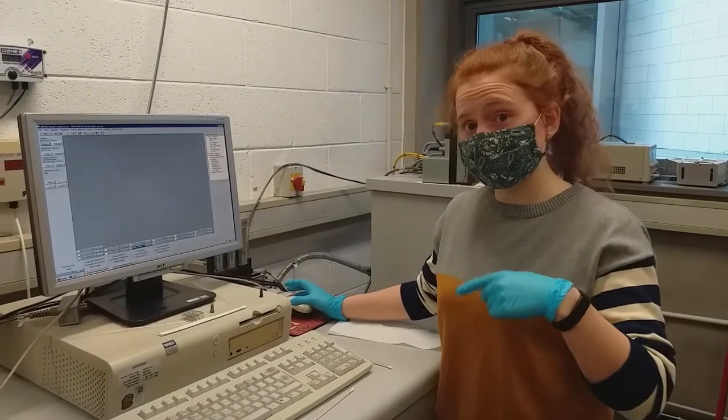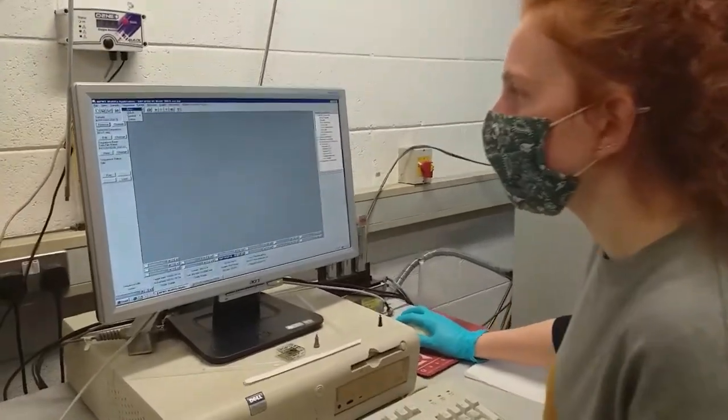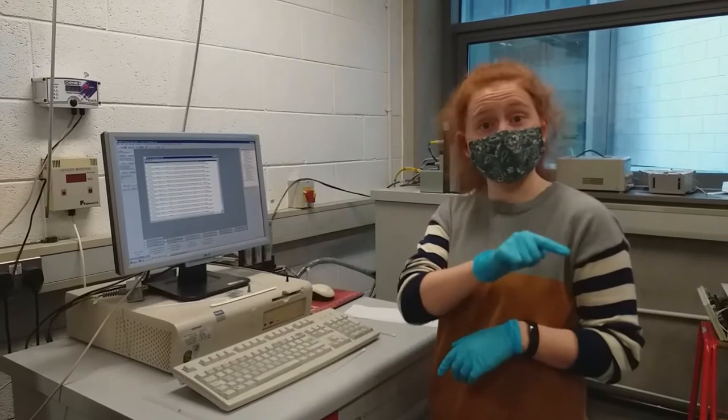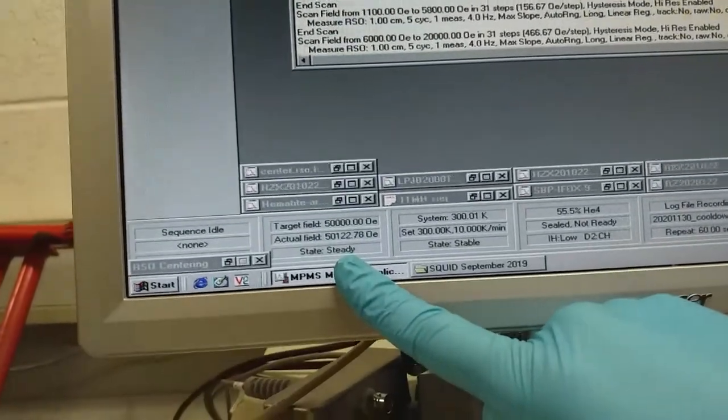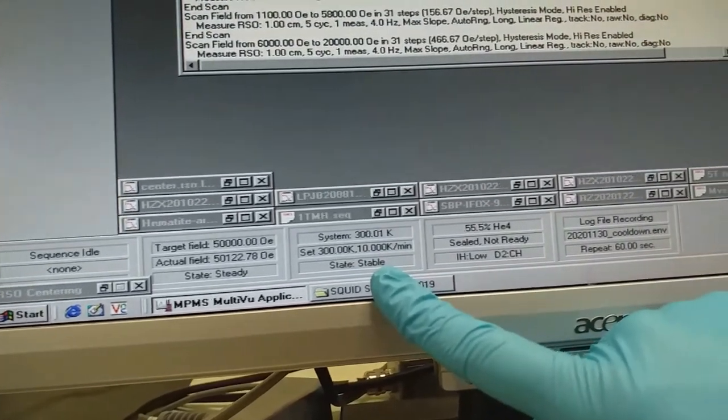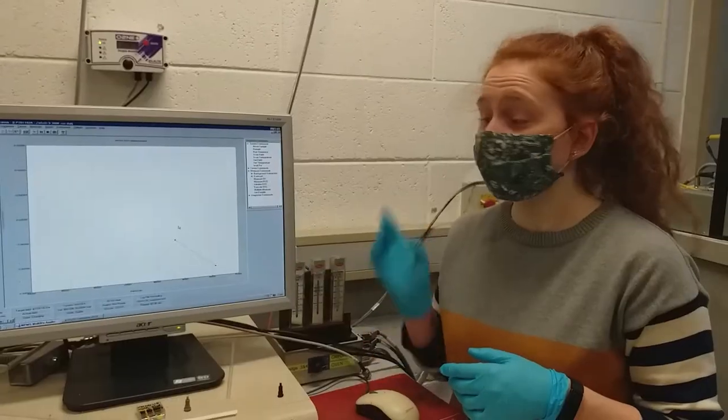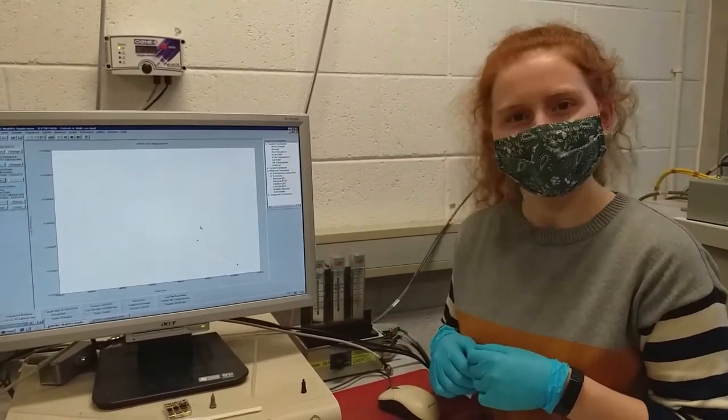Now I need to choose a sequence to run but I have one saved in my folder so I'll head to that straight away. I want to run a full loop from 5 tesla to minus 5 and then back to 5 tesla again, all at 300K. I just like to check everything once more before I actually start the measurement just to make sure everything is okay. So this is running away now, so I can come back in about 3 hours to check to see what my loop looks like.